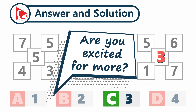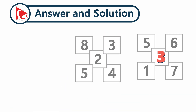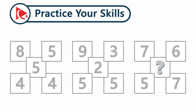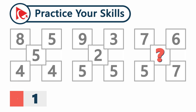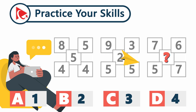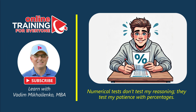Are you excited for more? Try this practice question. You are presented with three shapes; each shape has five squares with numbers inside. The first shape has numbers eight, five, four, four, and number five in the middle. The second shape has numbers nine, three, five, five, and number two in the middle. The third shape has numbers seven, six, seven, and five, with a missing number in the middle. Select your answer from choices A — one, B — two, C — three, and D — four. Once you've calculated your answer, share it in the comments.